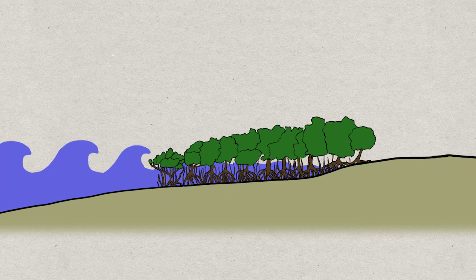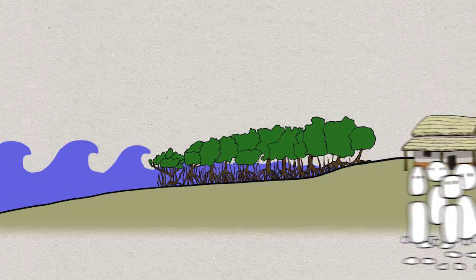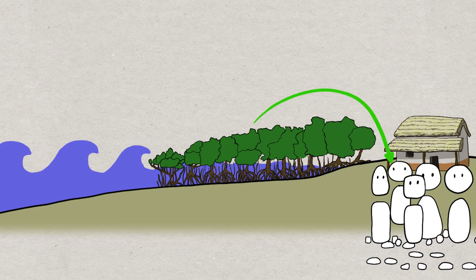A mangrove, coral reef, or marsh, for example, will help reduce damage from storms, flooding, and storm surge. Offered entirely for free from nature, so it's hard to find out how much value it has.